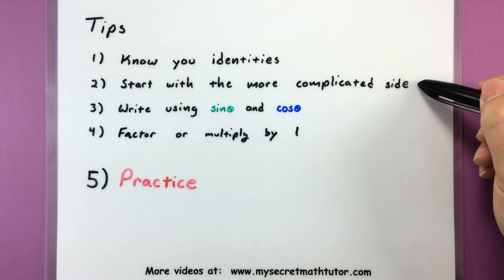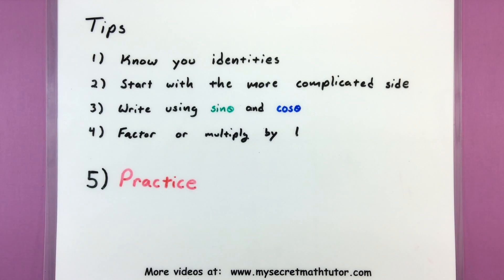Another good tip is always start with the more complicated side. Usually we have a little bit of a simpler time canceling things out or making things simpler. So the more complicated side is usually easier to do that with.